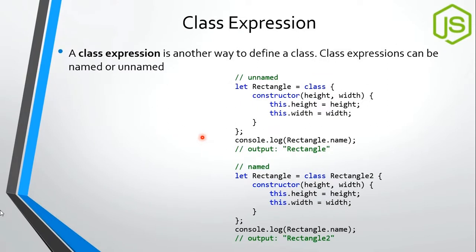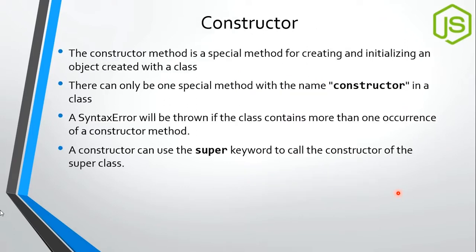Class expression is another way to define a class, and it can be named or unnamed — just like function expressions. An unnamed class expression is called anonymous, and we use the variable name to create and access the class. A class expression can also be named, and in that case we use the expression name with the class expression. Both syntaxes are correct.